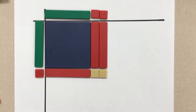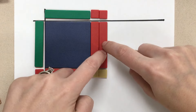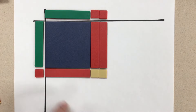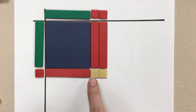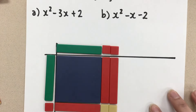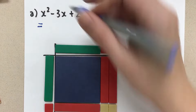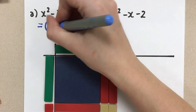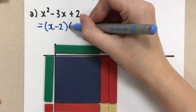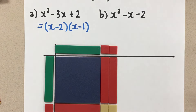So the length here is x minus 2, and the width is x minus 1. When we multiply them out to check our answer: x times x gives us x squared, x times negative 1 is negative x, negative 1 times a positive x is a negative x, and negative 1 times negative 2 is positive 2. So it works out. Our answer, factoring that trinomial, is x minus 2 times x minus 1. And now we've factored that expression using our algebra tiles.